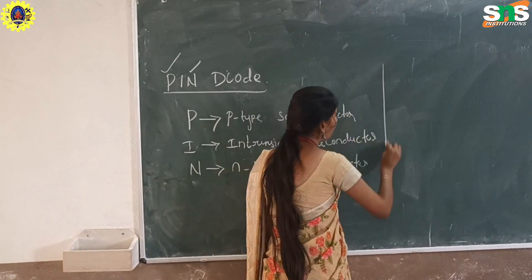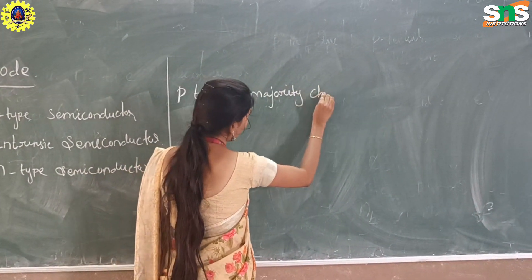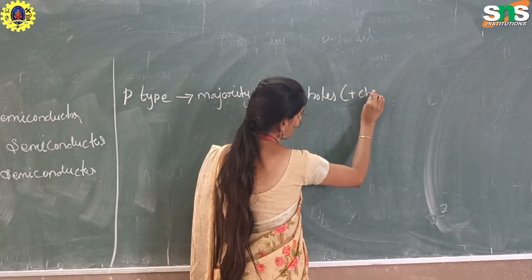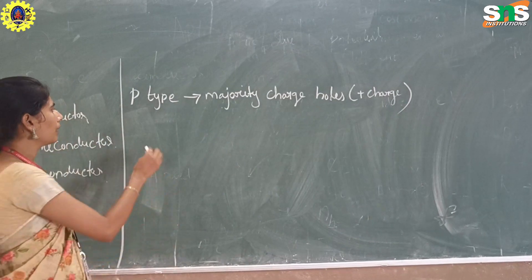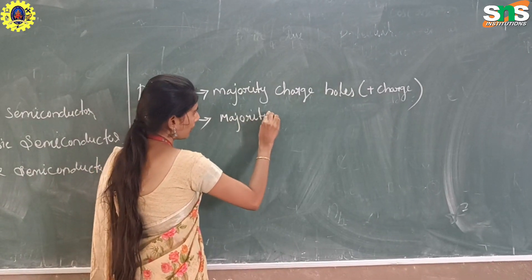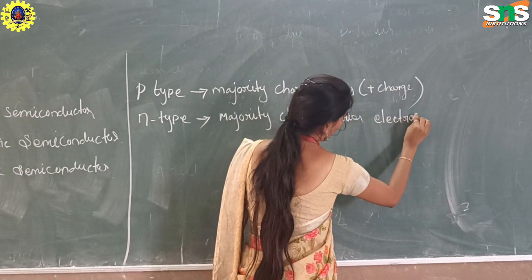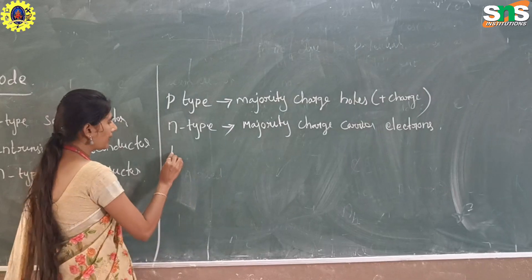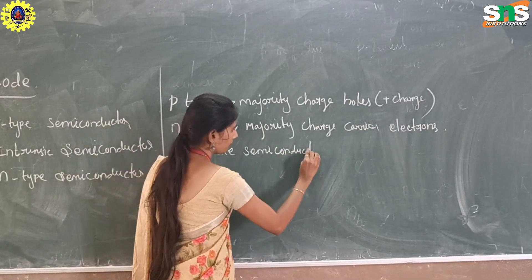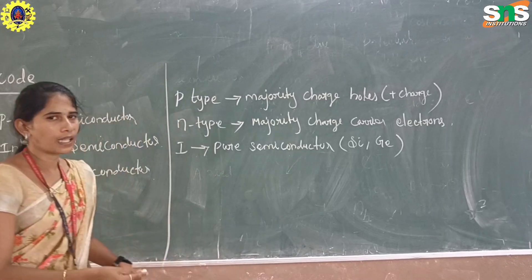In P-type semiconductor, the majority charge carrier is holes — holes are denoted by positive charge. In N-type semiconductor, the majority charge carriers are electrons. At least you have to know the pure semiconductor examples: silicon and germanium are examples of intrinsic semiconductors.